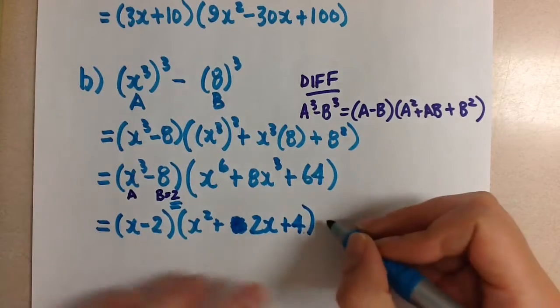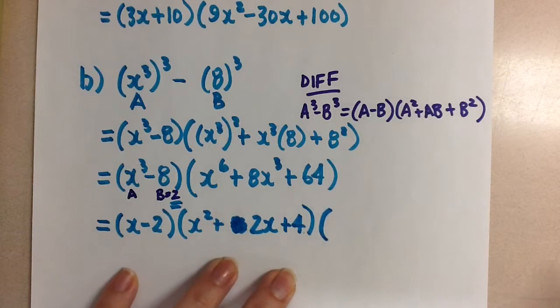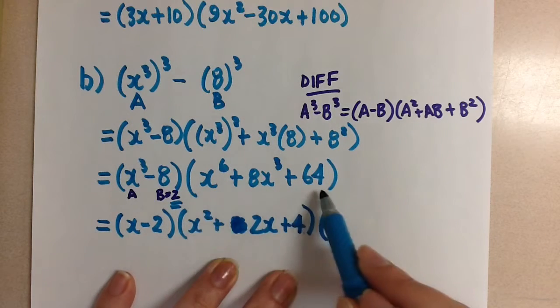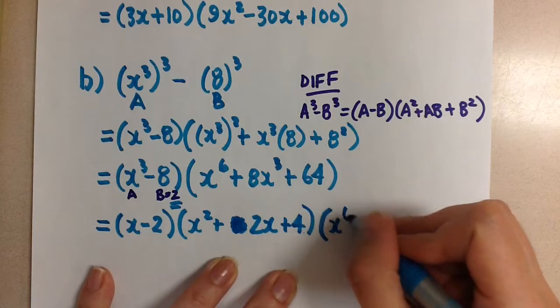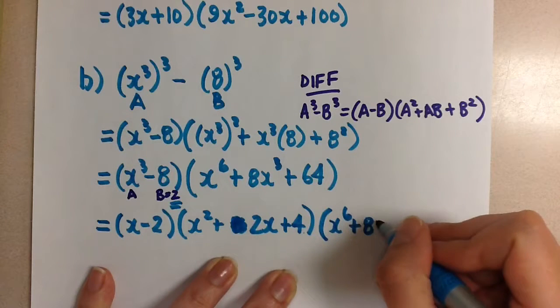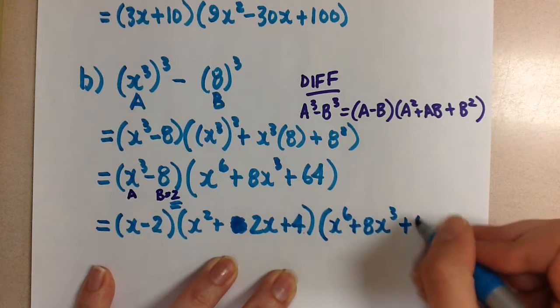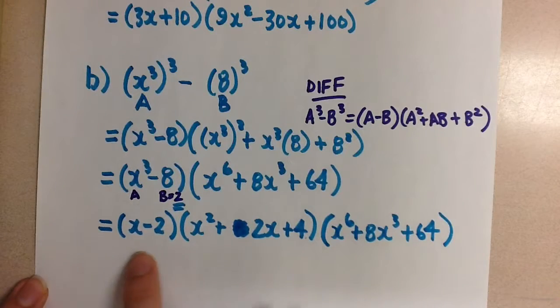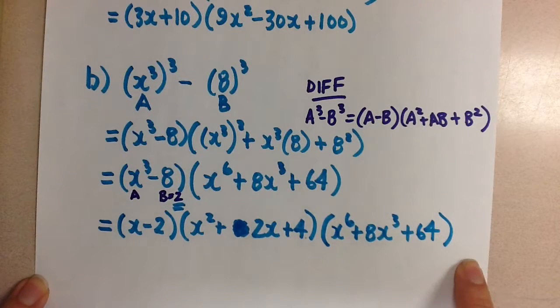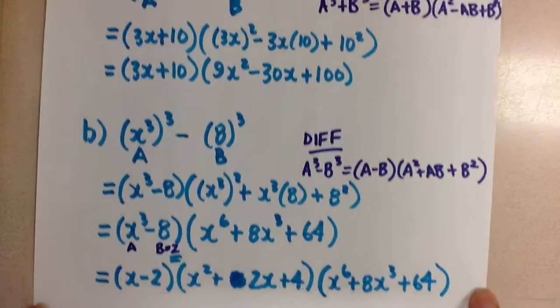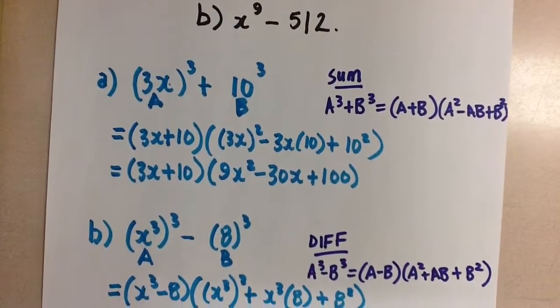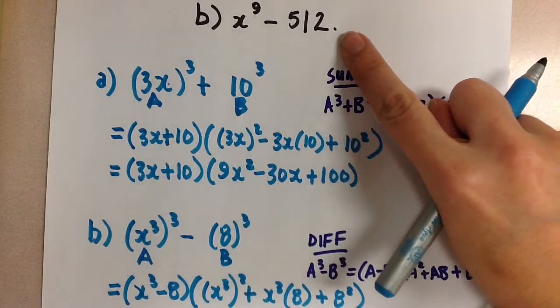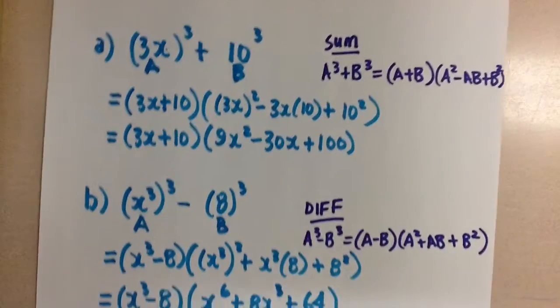And then times the original expression that we had up here. We can't forget about that one. And now this is the completely factored form of our original question here, x to the 9 minus 512.